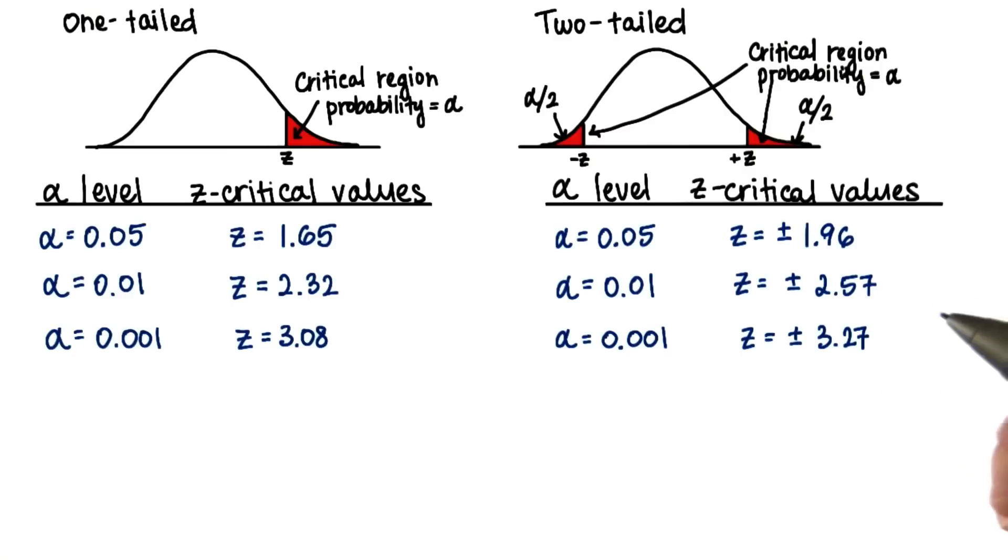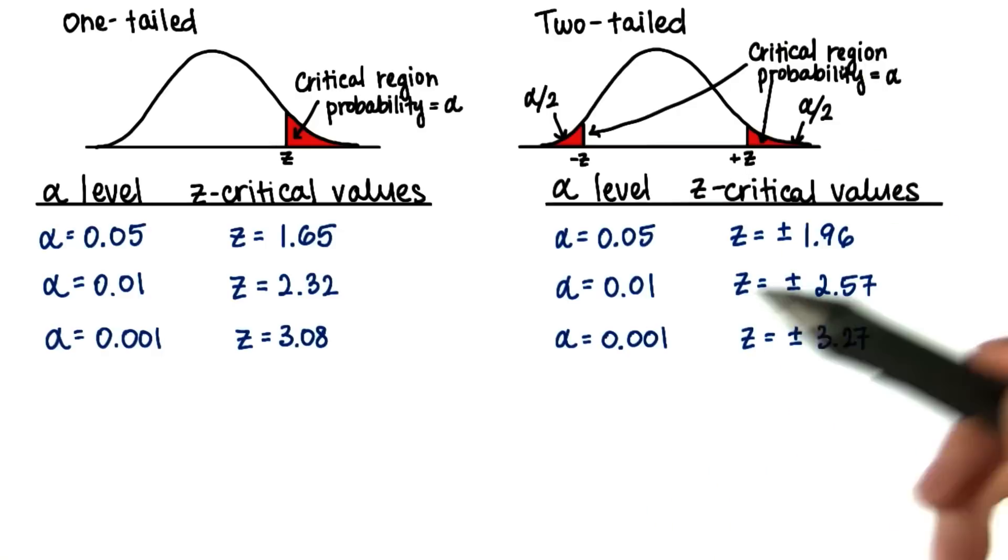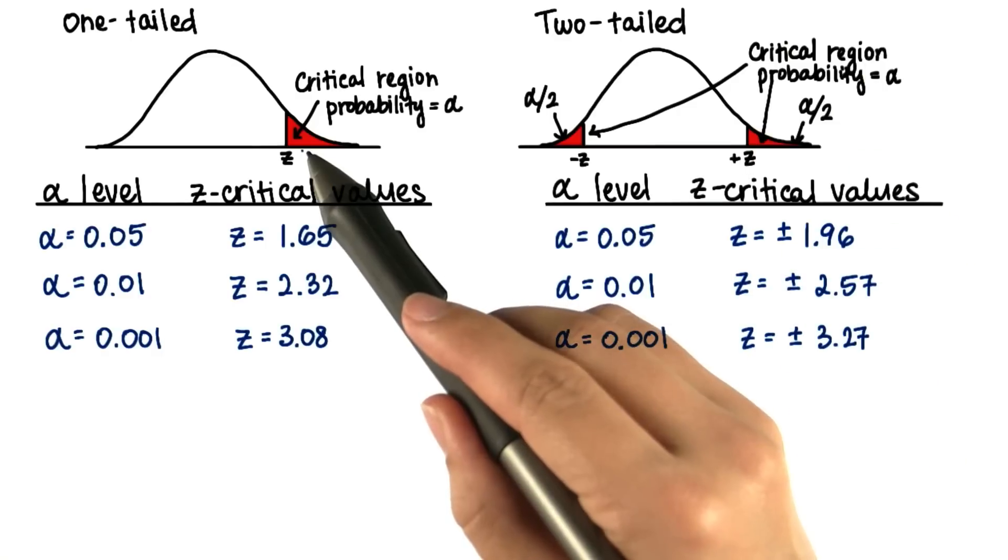What does this mean? Depending on our criteria for what constitutes likely or unlikely, if we get a sample mean in the critical region, here for a one-tailed test,